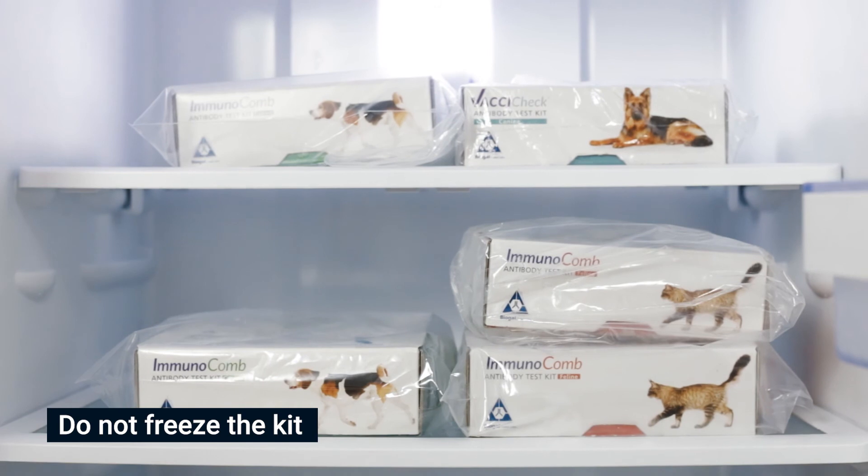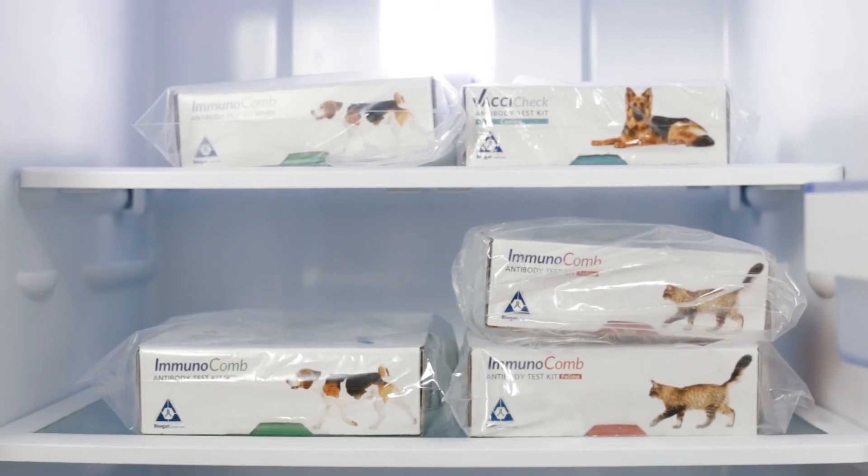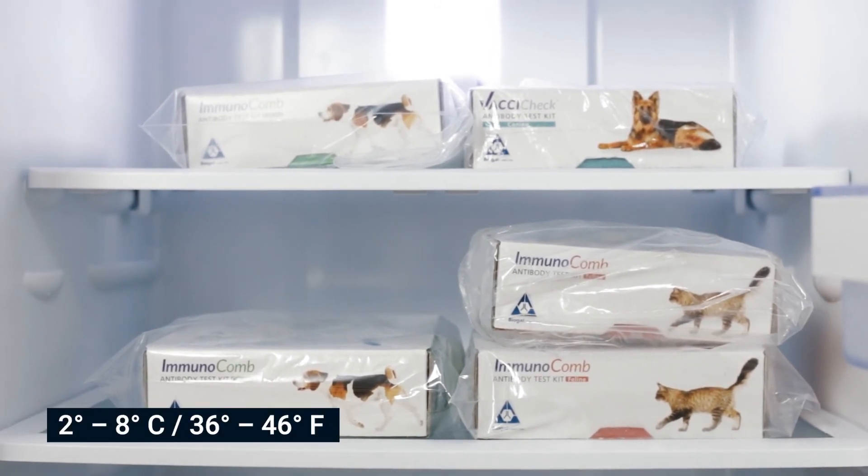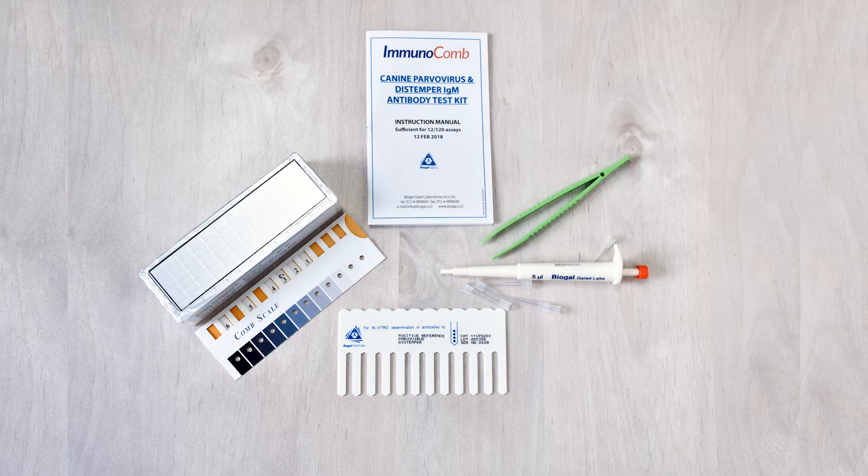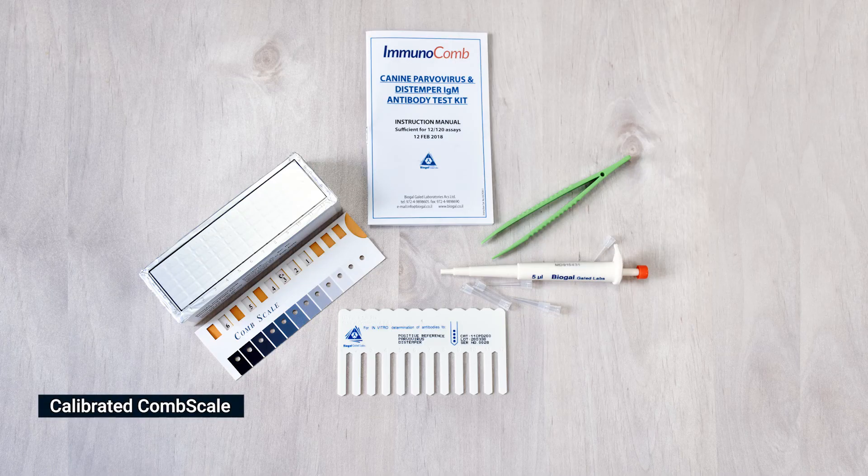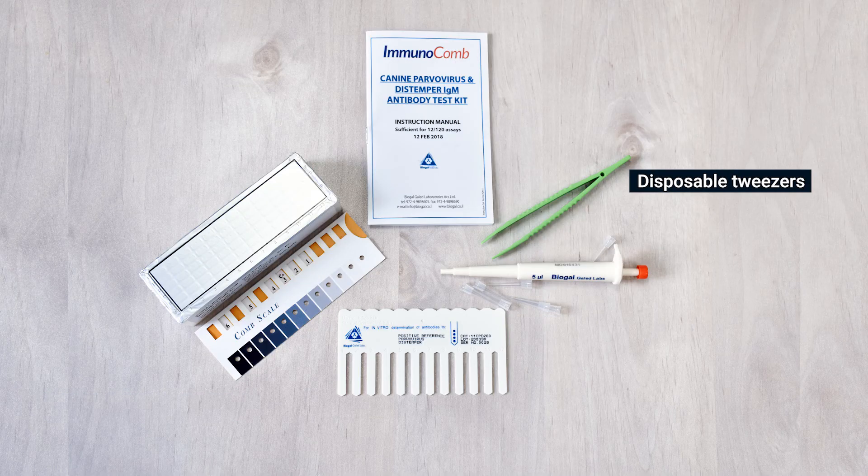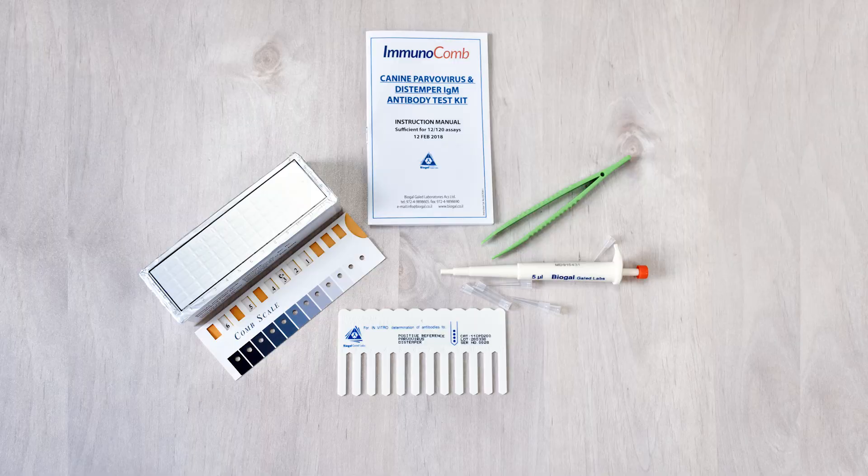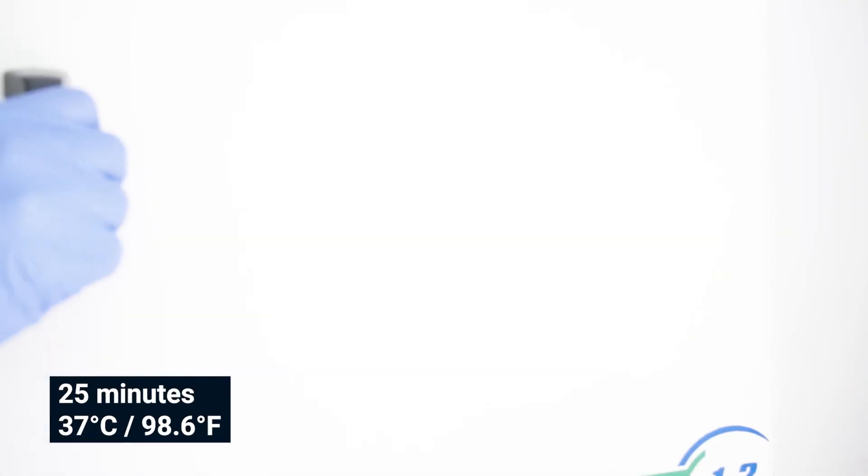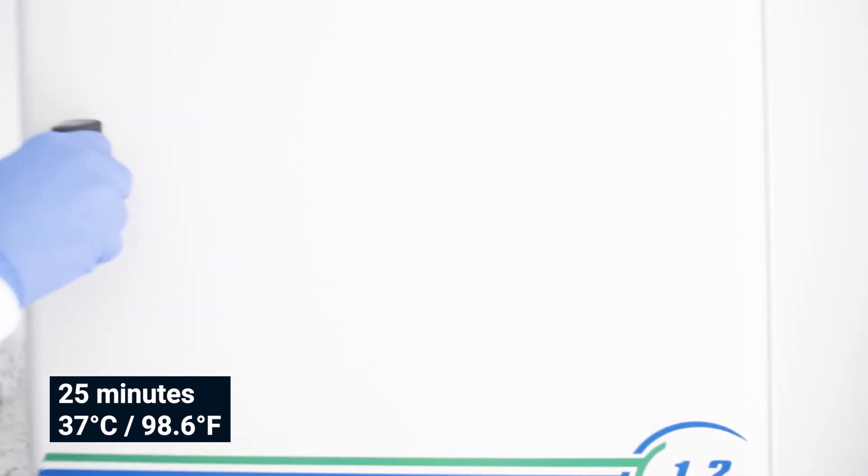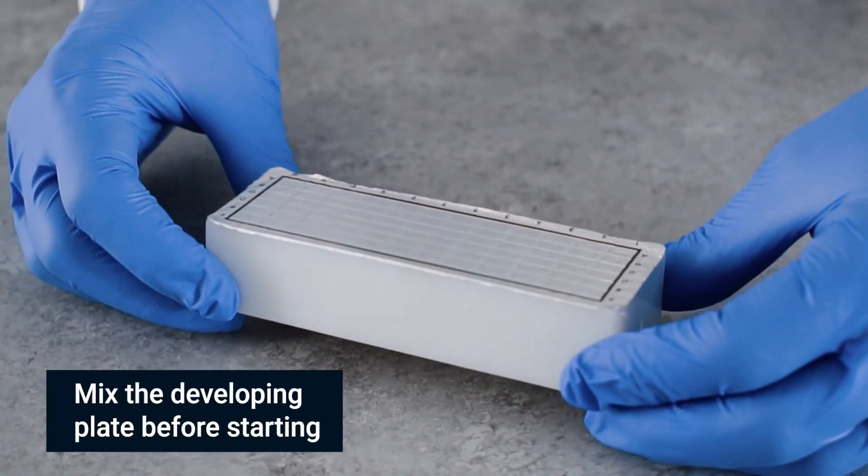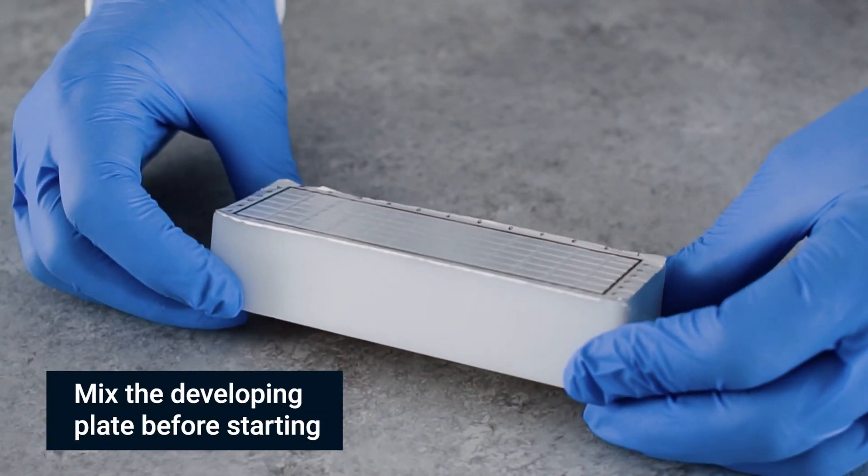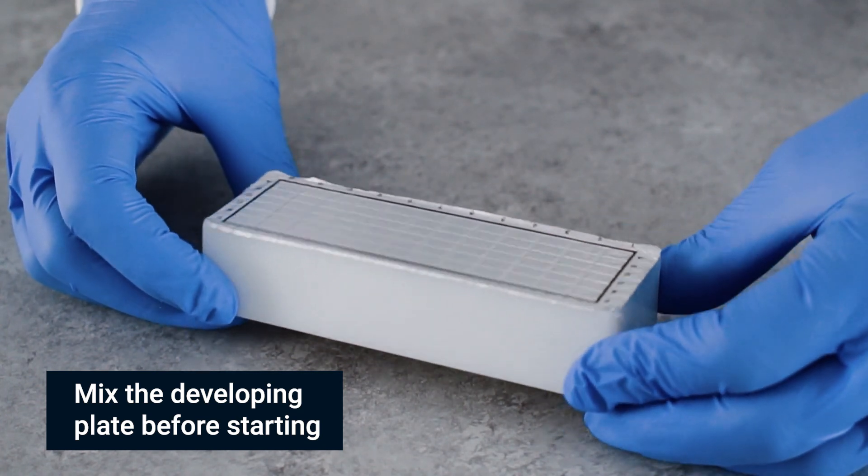Store the kit under refrigeration between 2-8°C (36-46°F). Before testing, bring the developing plate to room temperature by removing all kit components and placing them on a workspace for 60-120 minutes, or incubate only the plate at 37°C (98.6°F) for 25 minutes. Mix reagents by gently shaking the developing plate several times.